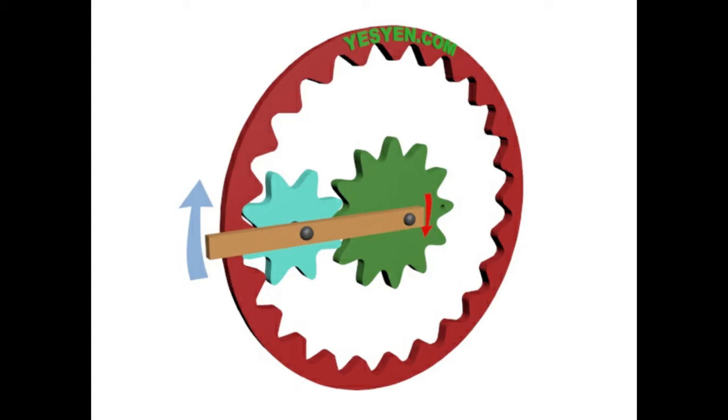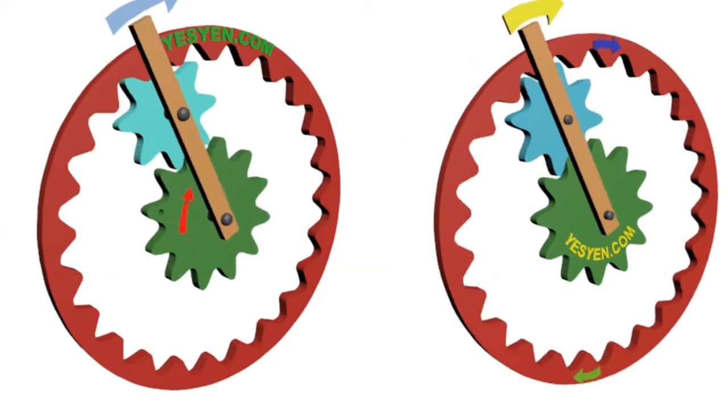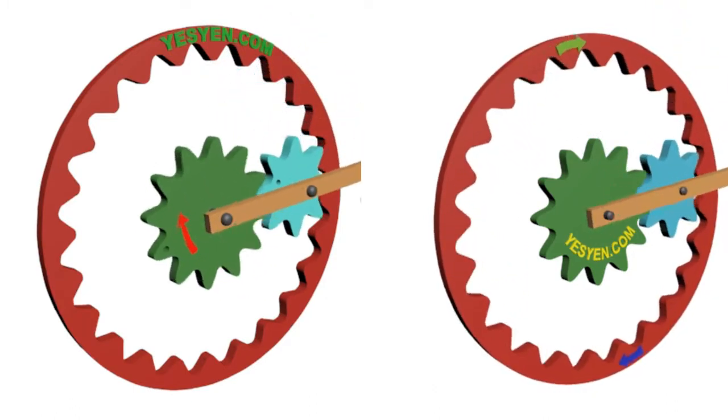As it rotates, it carries the pinion gear which is attached to it as shown. Two scenarios were imagined by Brown.